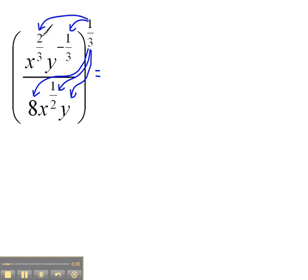So that's going to give us x to the 2 thirds raised to the 1 third. Well, power to power, we multiply. So 2 thirds times 1 third would be 2 over 9. And then y to the negative 1 third raised to the 1 third. Again, power to power, we would multiply. So that would be y to the negative 1 ninth.